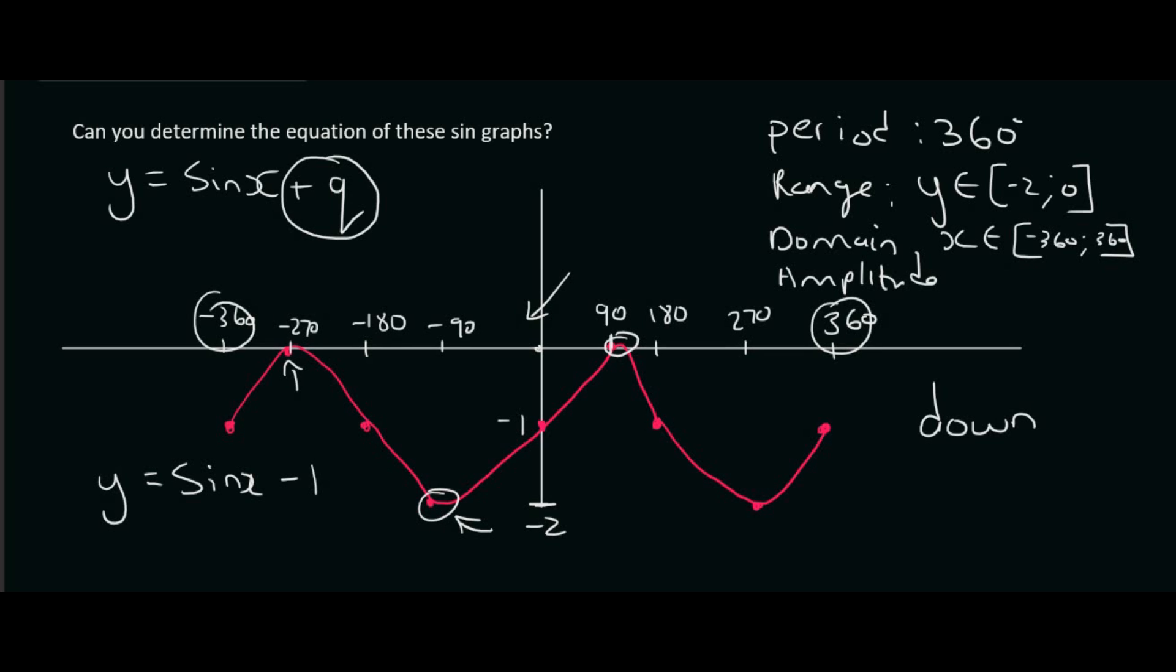And then the amplitude. So now we need to find the resting position. The resting position is like the halfway point, which in this case is over here. So it has a y value of minus 1. We then look at the distance from that resting position to the highest point, which is over there. And so from minus 1 to 0, that's just the distance of 1. And so the amplitude for that graph is just going to be 1.